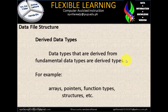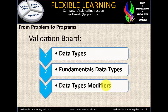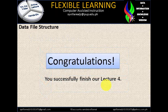Derived data types are data types that are derived from fundamental data types — for example, arrays, pointers, function types, structures, etc. After this, we'll discuss abstract data types and other types of data. Validation board: we finished Data Types, Fundamental Data Types, and Data Types Modifiers. That's all for today. Thank you for watching and good luck. Congratulations — you successfully finished lecture number 4.